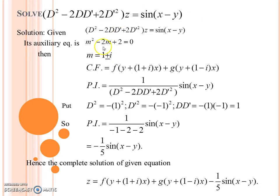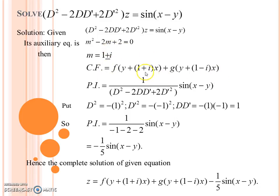The auxiliary equation is m² − 2m + 2 = 0, obtained by putting D equal to m and D' equal to 1. The roots are m = 1 ± i, which are complex. Therefore CF is f(y + (1+i)x) + g(y + (1−i)x).